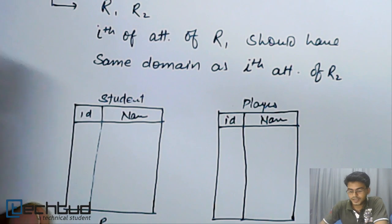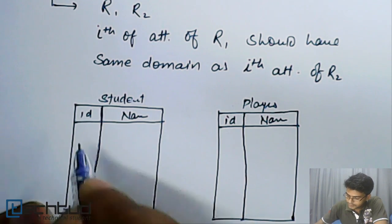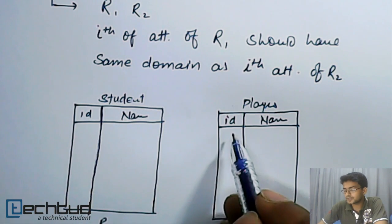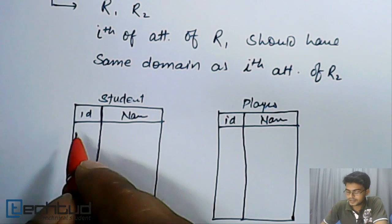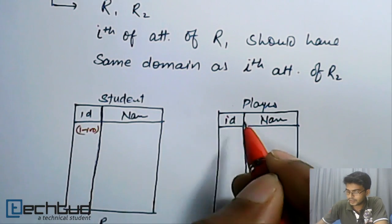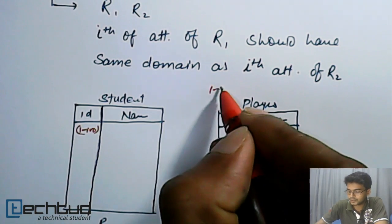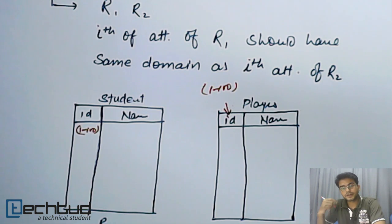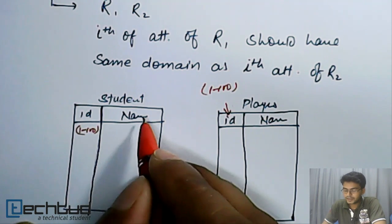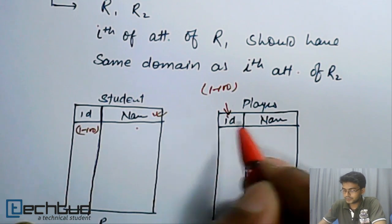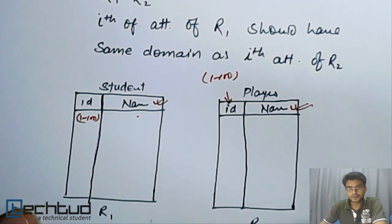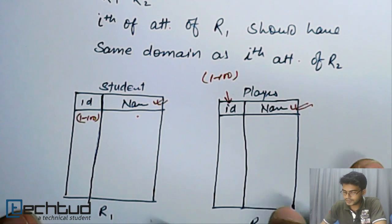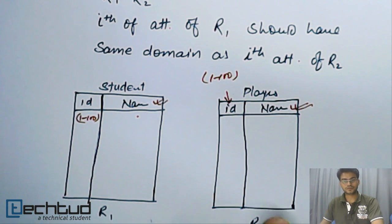The ith attribute of R1 should have the same domain as the ith attribute of R2. If ID has a domain of 1 to 200, then the corresponding ID in R2 should also have domain 1 to 200. If the domain is different, then we cannot perform set operations over these relations. Similarly, the name domain for R1 should be equal to the domain for name in R2. Corresponding attributes should have the same domain. This is union compatibility.